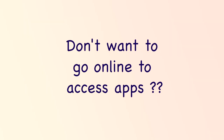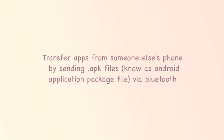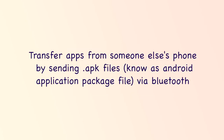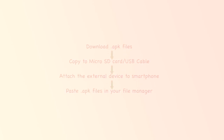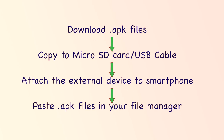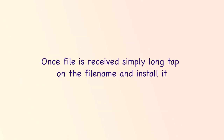If you don't want to or are unable to go online to access apps, you can transfer apps from someone else's phone by sending .apk files, also known as Android application package files, via Bluetooth. Alternatively, you could download the .apk file to your device's microSD card or use a USB cable to move it from a PC. When you have received the file, simply long-tap on the file name and you will be prompted to install it.